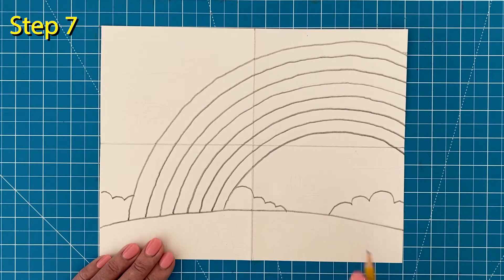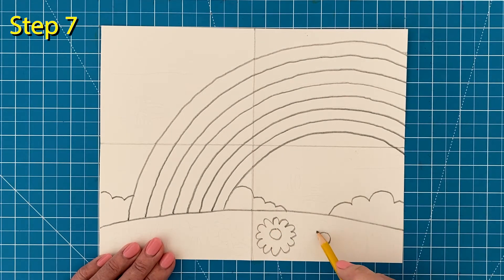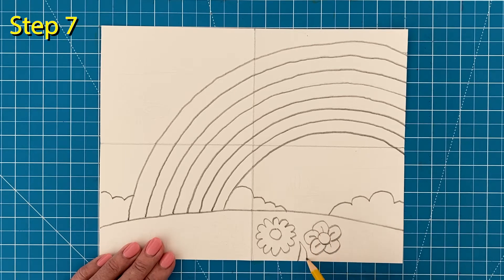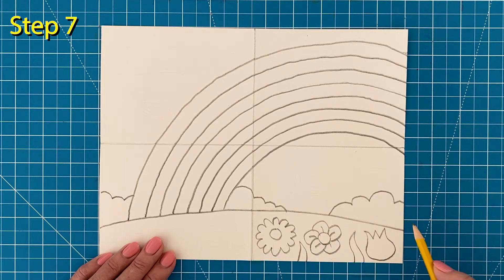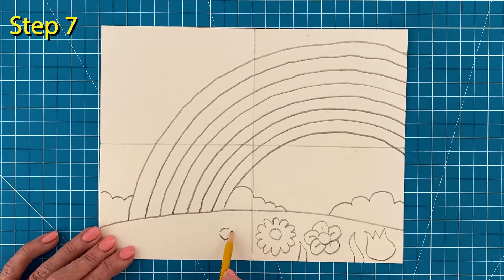Step number seven, to decorate the grass below, add about three large flowers on the right side. Then add about three large ones on the left with a few leaves in between.